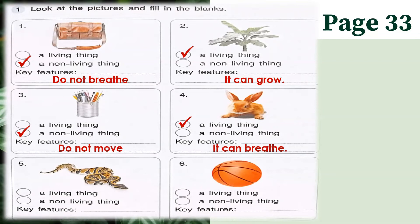For number five, we have a picture of a snake. Can you say snake? Very good. Is a snake a living thing or a non-living thing? A snake is of course a living thing because it can move — it can crawl on the ground. For number six, this is a picture of a ball. Is a ball a living thing or non-living thing? Of course it's a non-living thing because non-living things do not move. This is the second part of your activity — if you're not yet finished writing, you can pause this.